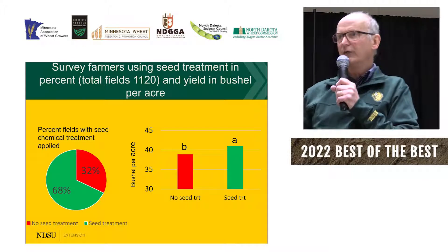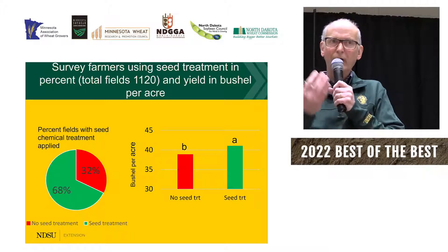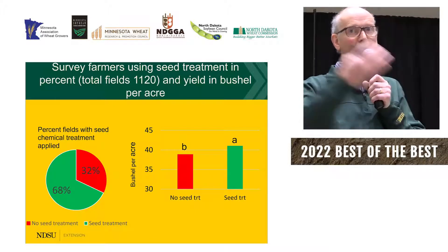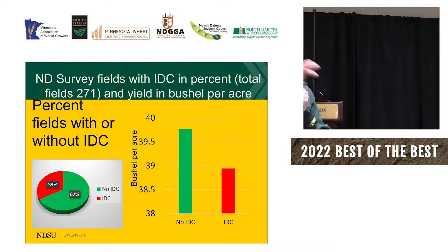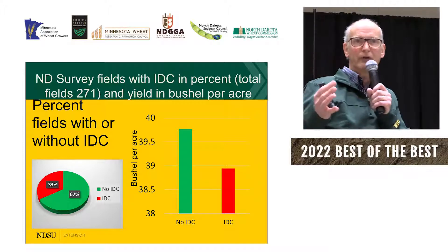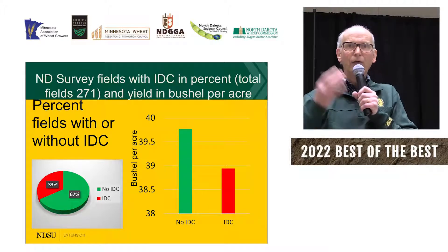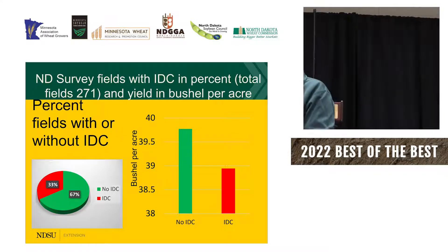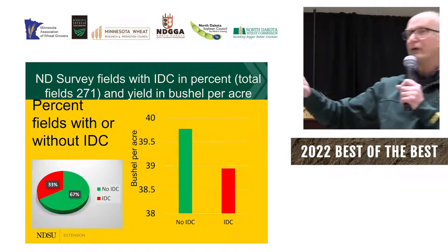Another question we asked: do you use seed treatment or not? The green indicates farmers who use seed treatments, red is no seed treatment, and there is an increase in yield on average if you use seed treatment. For IDC — a smaller dataset of about 270 fields — we asked do you have IDC and what is your yield? No IDC compared to IDC shows a yield difference on large scale. However, IDC is very patchy and not always easy to predict. The main thing you can do is variety selection.